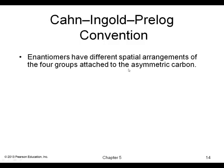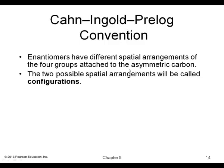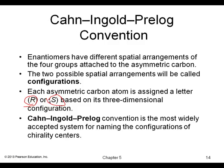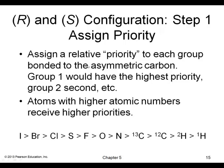How do we distinguish between enantiomers? We use the R/S convention to label chiral carbons as R or S. We assign a priority to each group bonded to the chiral carbon: group one has the highest priority, and group four has the lowest. We base those priorities on atomic numbers — the higher the atomic number, the higher the priority. For example, iodine would have a much higher priority than oxygen.